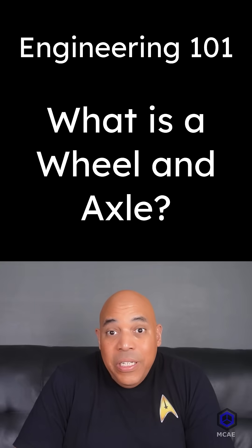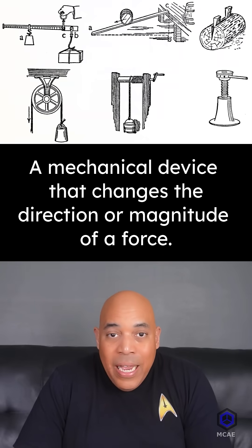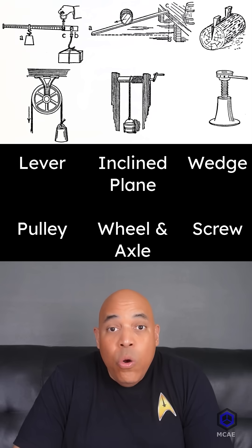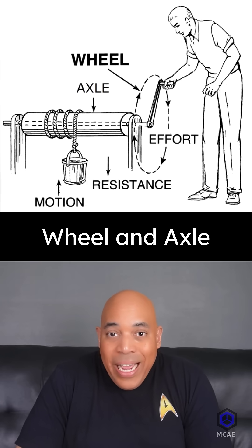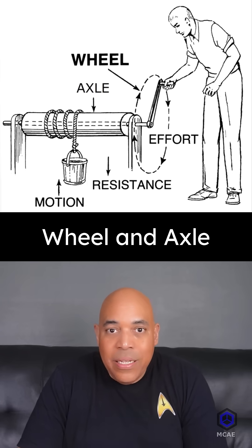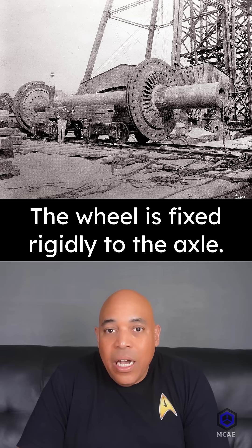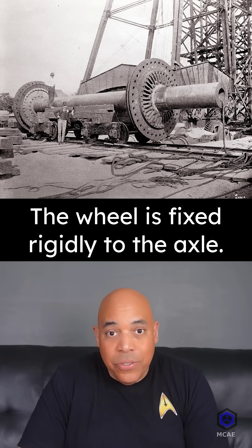A simple machine is a mechanical device that changes the direction or magnitude of a force. The wheel and axle consists of a wheel fixed rigidly to an axle.